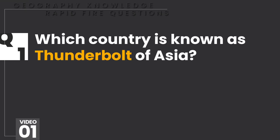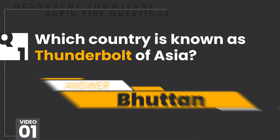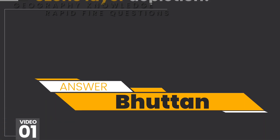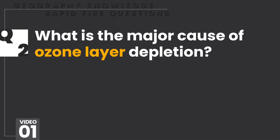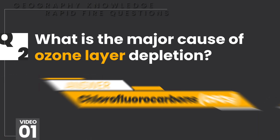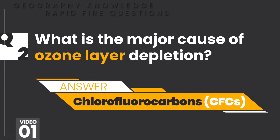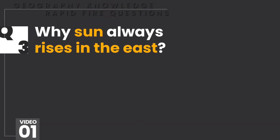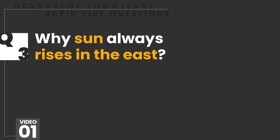Which country is known as Thunderbolt of Asia? Bhutan. What is the major cause of ozone layer depletion? Chlorofluorocarbons. Why does the sun always rise in the east?